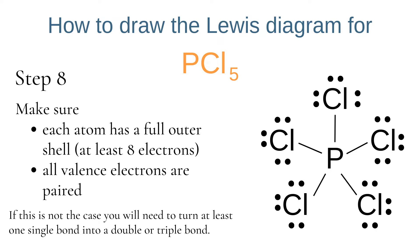Our final step is a check to make sure each atom has a full outer shell of at least 8 electrons and all valence electrons are paired. If this is not the case, you will need to turn at least one single bond into a double or triple bond. In this case, each surrounding chlorine atom has 8 electrons — 6 as lone pairs and 2 as a bonding pair. Phosphorus has 5 bonding pairs, so 10 electrons in total, and is also stable. All electrons are found as either lone pairs or bonding pairs, so we know our Lewis diagram is correct.